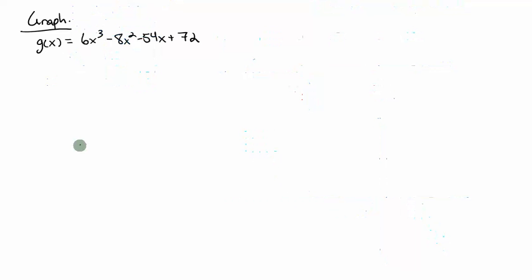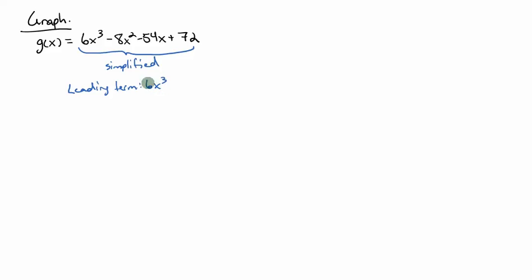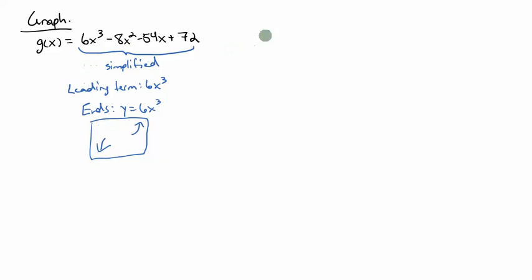Let's do another example. Once again, we have a simplified polynomial. Since there's nothing to combine, my leading term is simply 6x to the third. So my ends behave like y equals 6x to the third, because all the other terms become insignificant on the ends of the graph. I know x to the third has the left end going down and the right end going up. Multiplying by a positive does not flip that over, so here's the end behavior for this function. Now I need the factored version so I can get my zeros and multiplicities.